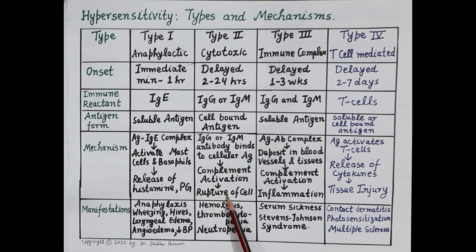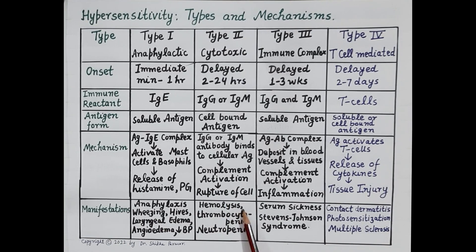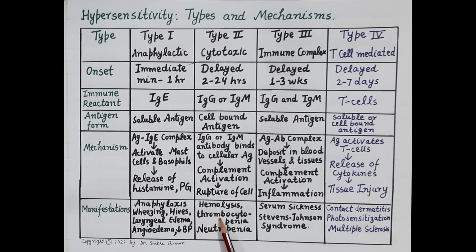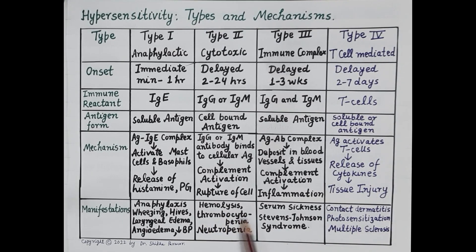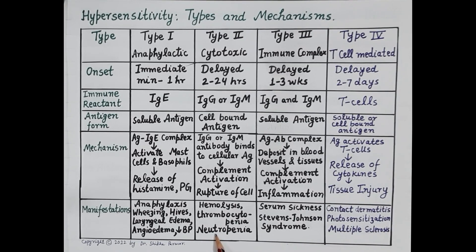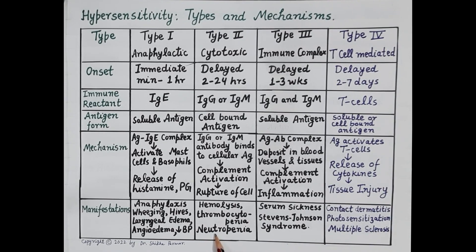Manifestations of Type 2 allergic reactions include rupture of red blood cells leading to hemolysis or hemolytic anemia, rupture of platelets leading to thrombocytopenia, and neutropenia. Drugs like quinidine can cause hemolytic anemia and thrombocytopenia.